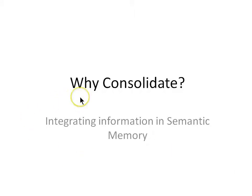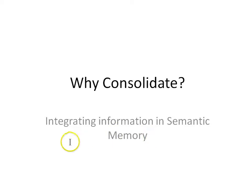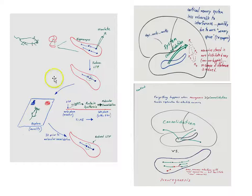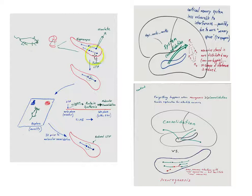In this lesson, we'll take a look at a third reason why we do system consolidation, and that has to do with integrating information into semantic memory. We'll also examine what semantic memory is and compare it to episodic memory. First, to recap: two other reasons why we might do system consolidation. System consolidation is when we move memories from the hippocampus out to the cortex for long-term storage, and the first reason had to do with interference by new learning.